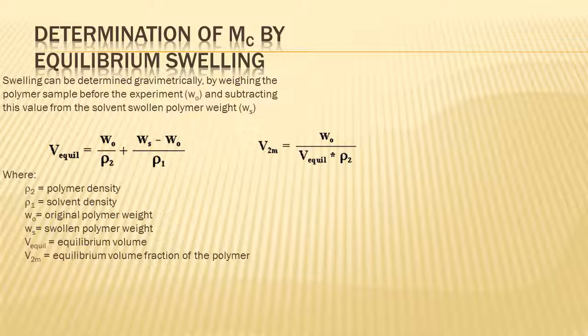Next, determination by equilibrium swelling. Swelling can be determined gravimetrically by weighing the polymer sample before the experiment and subtracting the value from the solvent-swollen polymer. Here are two formulas you can use. You're given original polymer weight, polymer density, solvent density, and the swollen polymer weight and original weight.